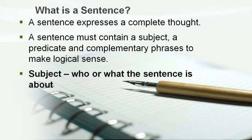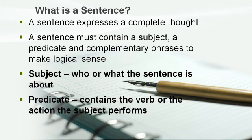The subject is who or what the sentence is about. The predicate contains the verb or the main action that the subject performs. So in order to have a complete sentence, you must have a subject, a verb, and things that come after the verb to complete the sentence.